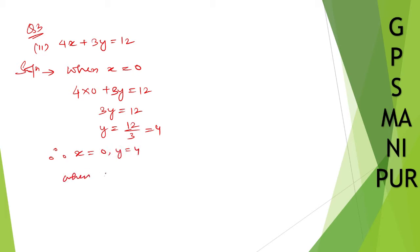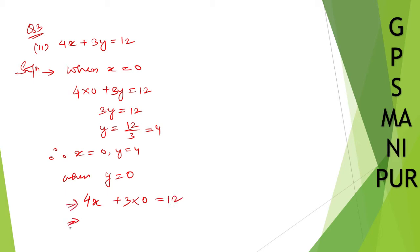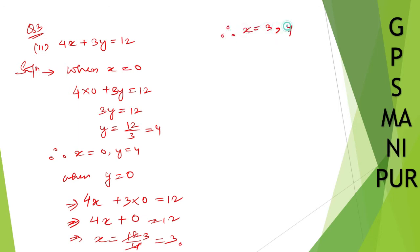Now let us put x as 1. Actually, let us take y is equal to 0 instead. So 4 into x plus 3 into 0 equal to 12. You can take any number. 4x plus 0 is equal to 12, so x is equal to 12 divided by 4, which is 3. Therefore, x is equal to 3, y is equal to 0.